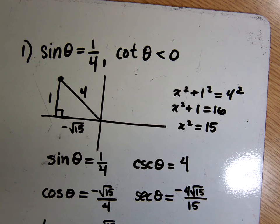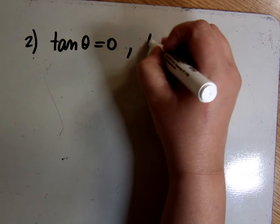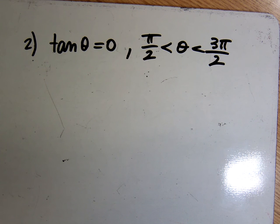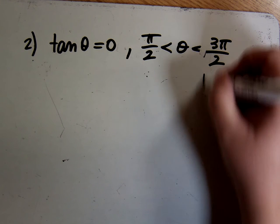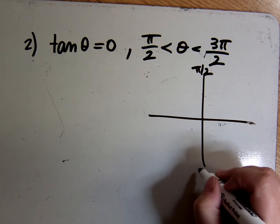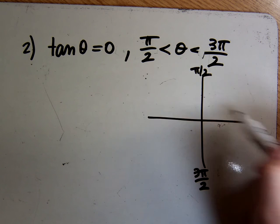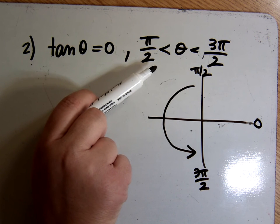Let's do another one. This one says the tangent of theta is 0, and theta is between pi over 2 and 3 pi over 2. This is just another way of telling me what quadrant we're in. Pi over 2 is straight up, and 3 pi over 2 is at the bottom. If theta is between those two going around, it's somewhere in the left half — so this tells me I'm in either the second or the third quadrant.